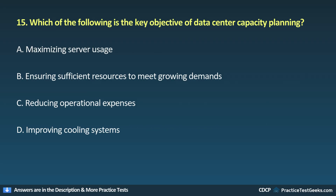Question 15. Which of the following is the key objective of data center capacity planning? A. Maximizing server usage. B. Ensuring sufficient resources to meet growing demands. C. Reducing operational expenses. D. Improving cooling systems.